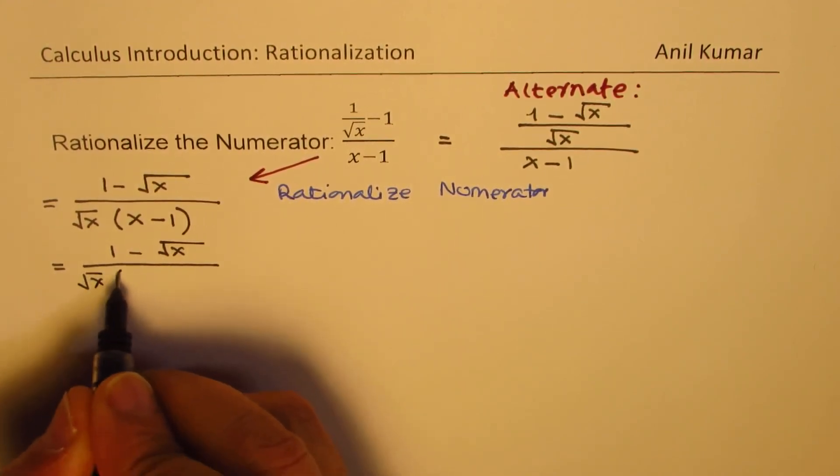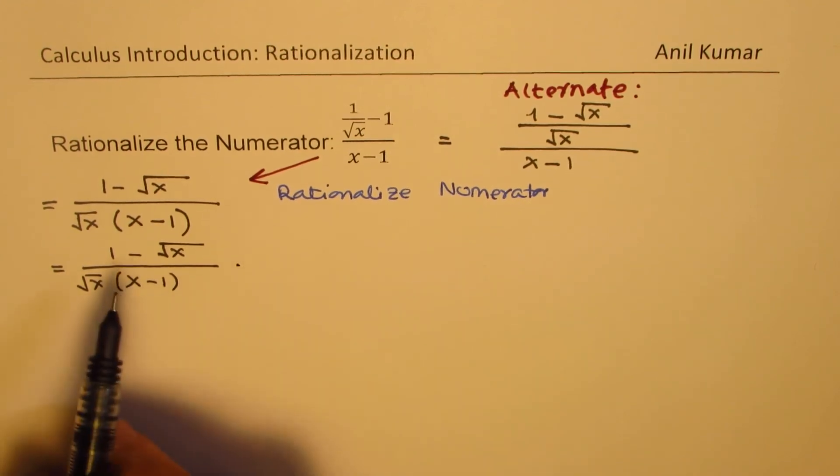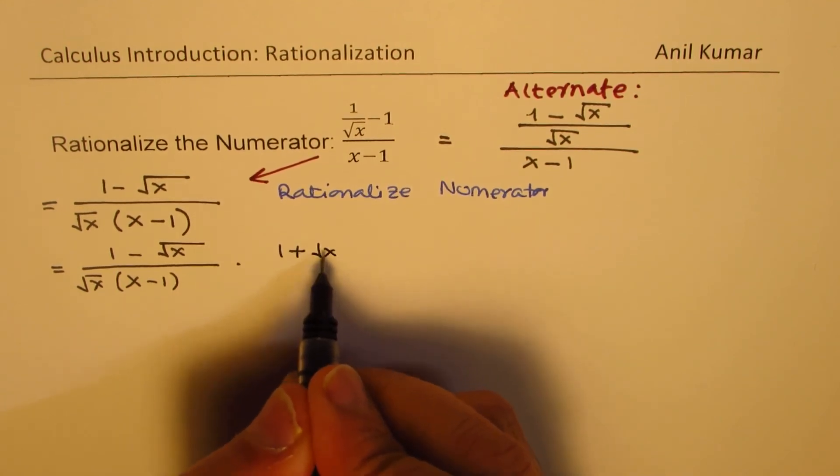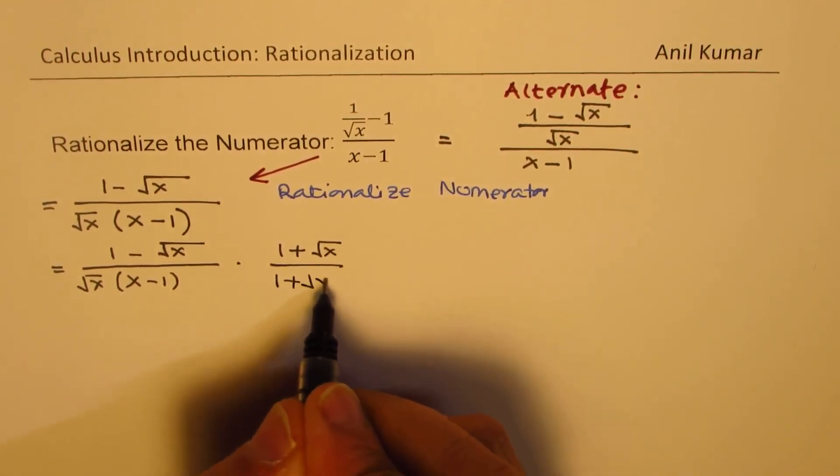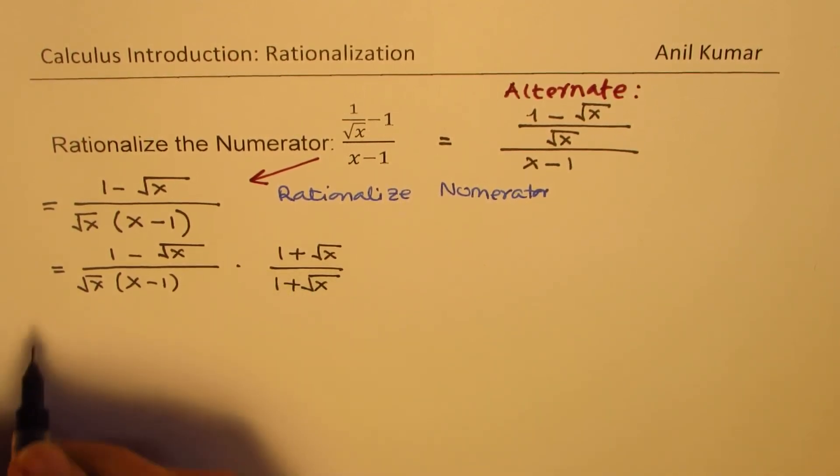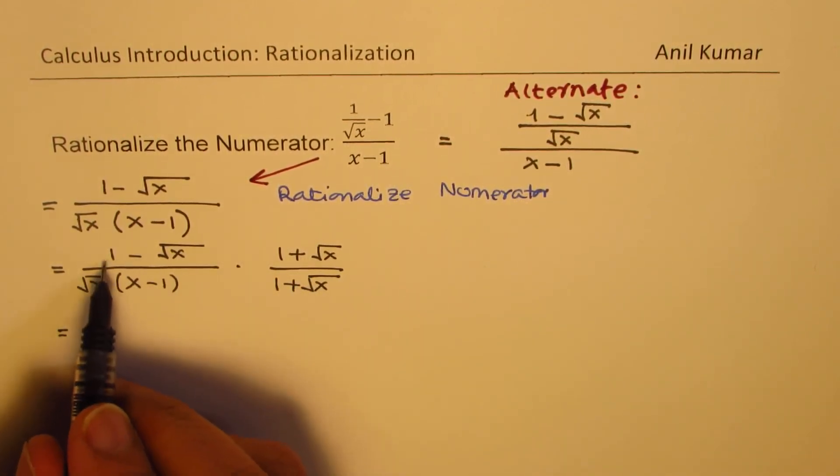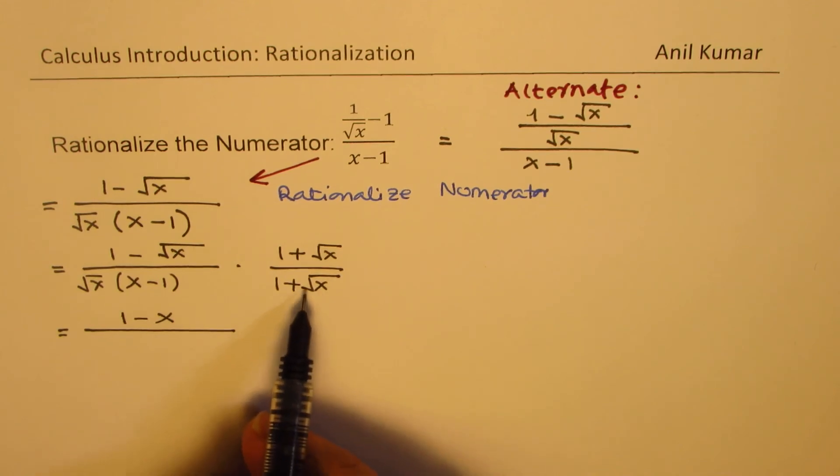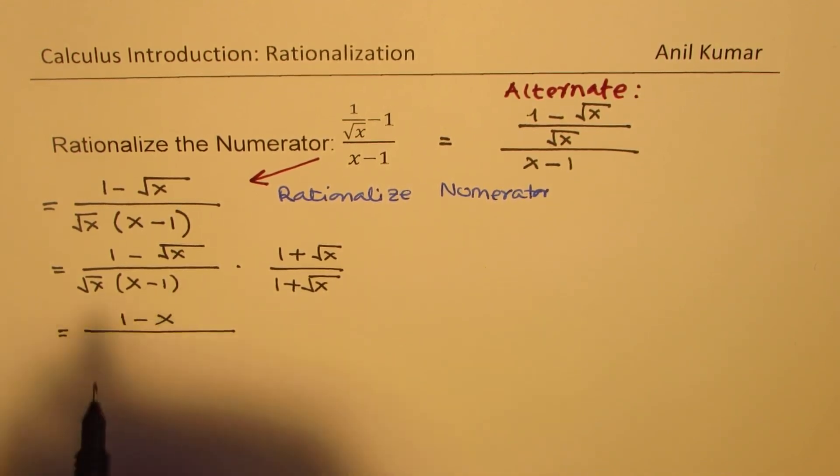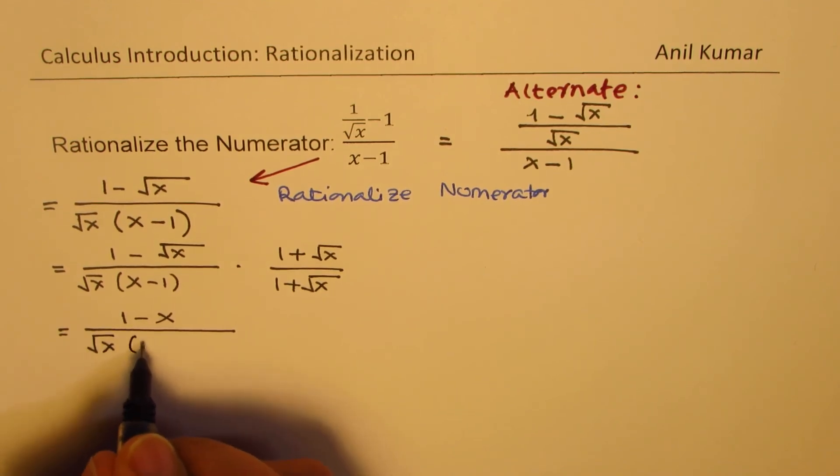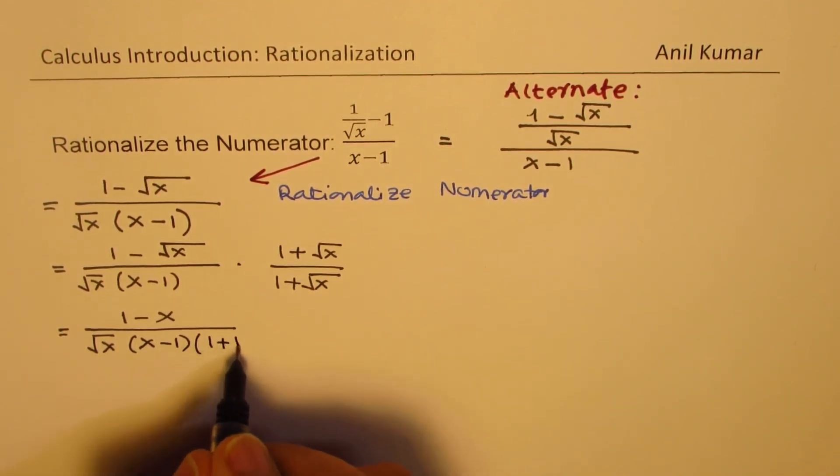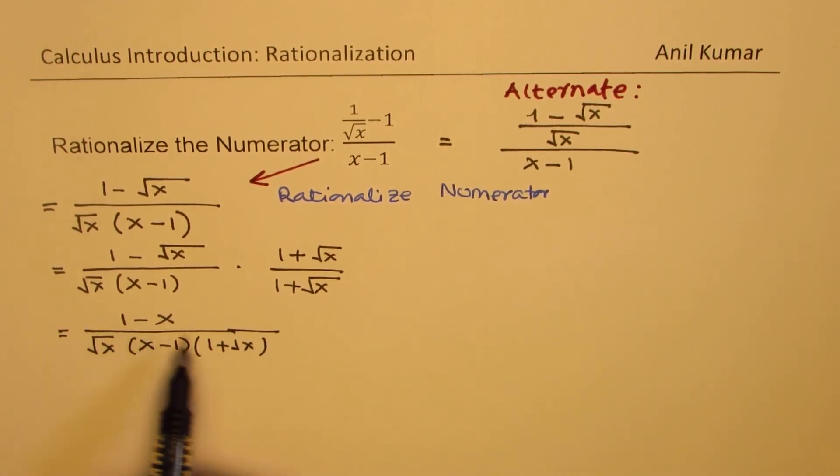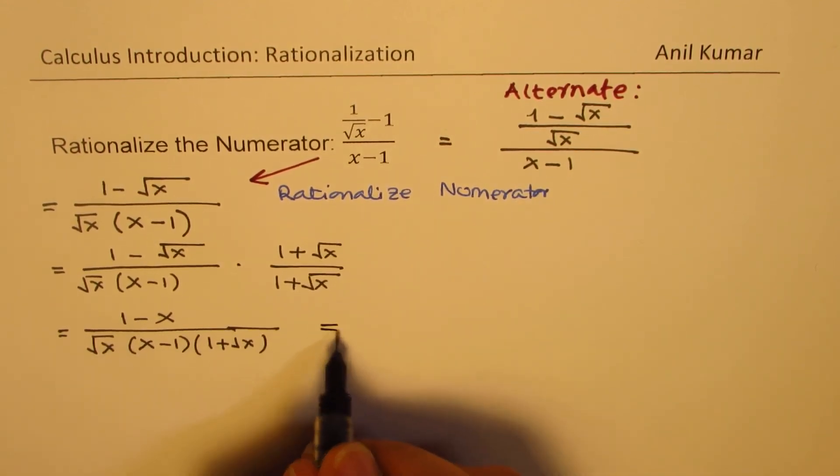See, what we have now here is, we'll rationalize with the conjugate, and conjugate of 1 minus square root of x is 1 plus square root of x. So we'll multiply and divide by 1 plus square root of x. So when you multiply, you get in the numerator difference of squares, which is 1 minus x. And in the denominator, do not expand. Do not expand. We get here square root of x times x minus 1 times 1 plus square root of x.